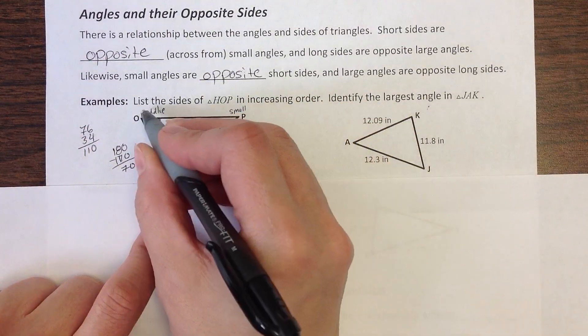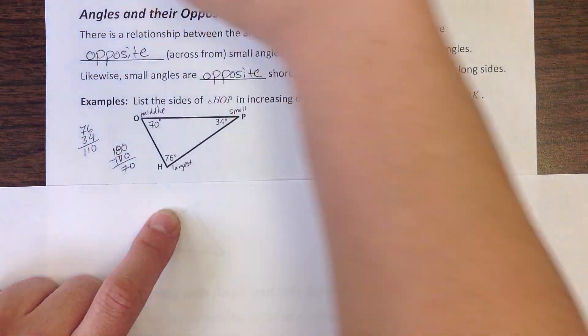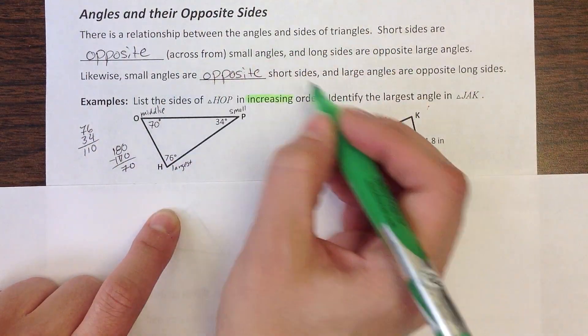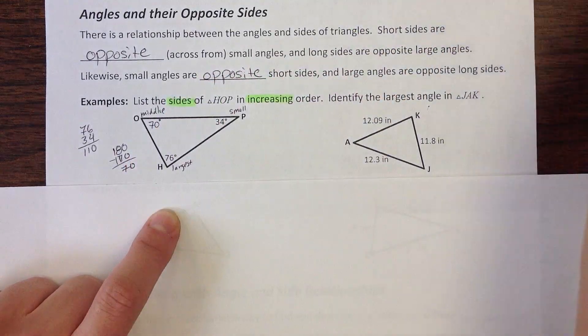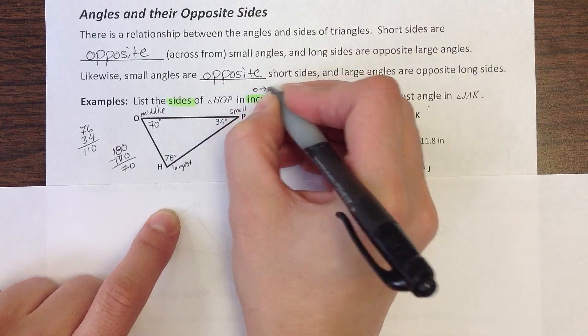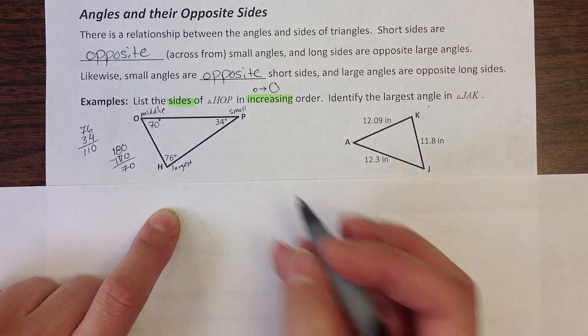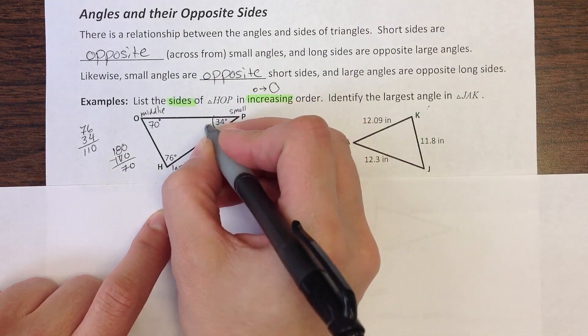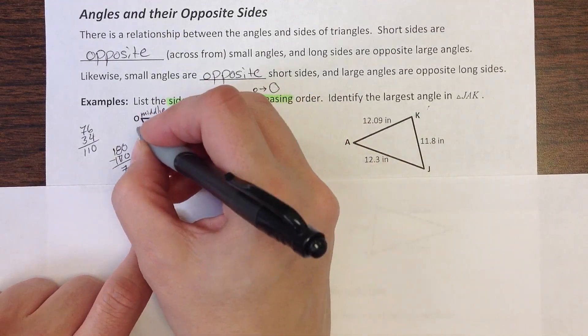So first of all, let me double check my directions. My directions are telling me to put these in increasing order, list my sides in increasing order. So increasing means small to big. So my smallest one is here at 34. If I go opposite that, I find side OH.